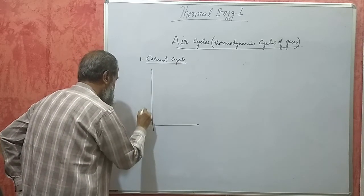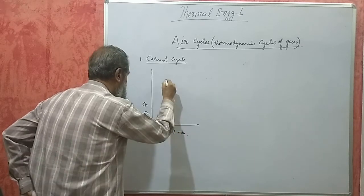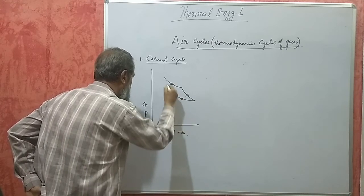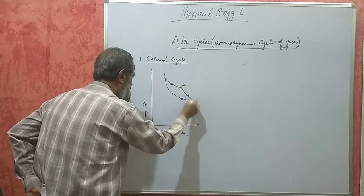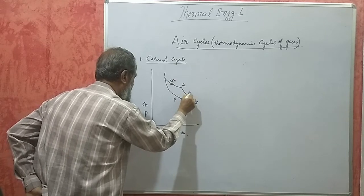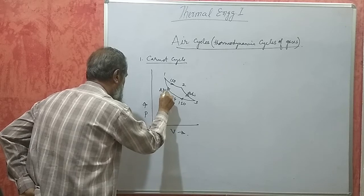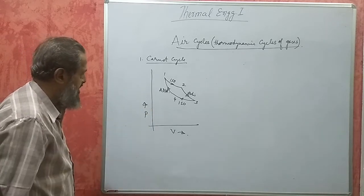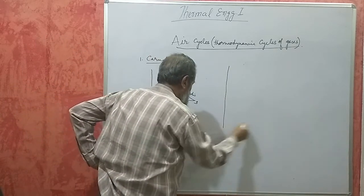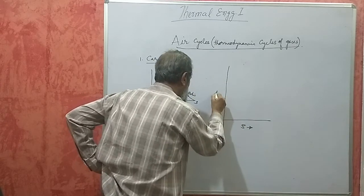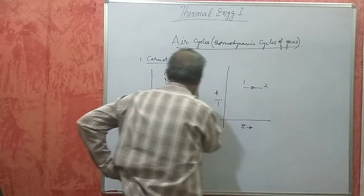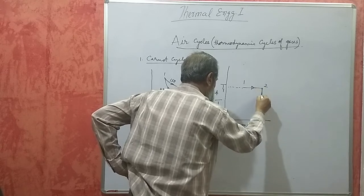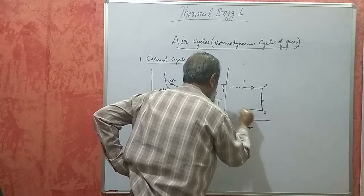For the Carnot cycle, the PV diagram shows four processes: isothermal expansion (1-2), adiabatic expansion (2-3), isothermal compression (3-4), and adiabatic compression (4-1). This sequence cannot be achieved practically because isothermal and adiabatic processes require contradictory conditions — one must be done very slowly and the other very quickly.